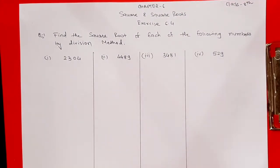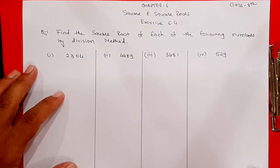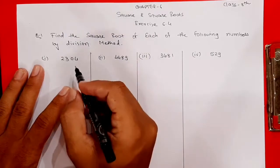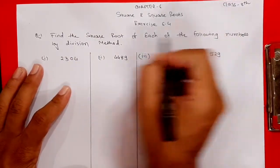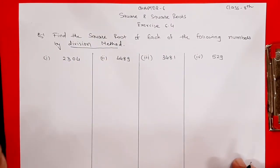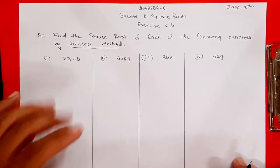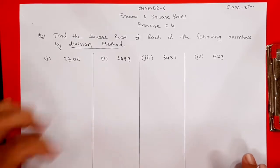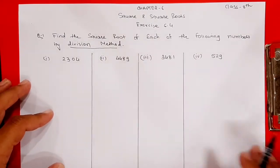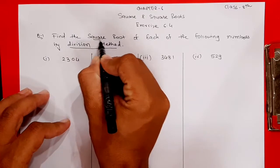Hello students, in the last video we discussed Exercise 6.3. Today we are going to start a new exercise, that is Exercise 6.4 of Chapter 6 - Squares and Square Roots. The first question is to find the square root by division method. We have discussed two methods: repeated subtraction and prime factorization. This third method is called the division method.